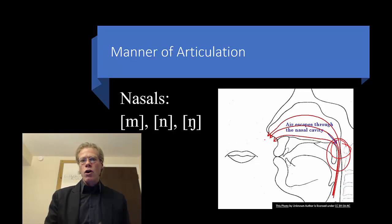Nasals generally involve a full blockage of the air coming through the mouth. So it's like a stop in that sense. But the velum is lowered and it goes through the nose. Also notice that in all of these cases the vocal folds are vibrating.